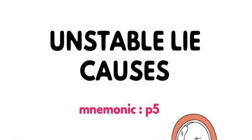Hi everyone. In this video we will discuss the different types of causes of unstable lie. Normal lie is the longitudinal lie. If the unstable lie is present, what are the causes?